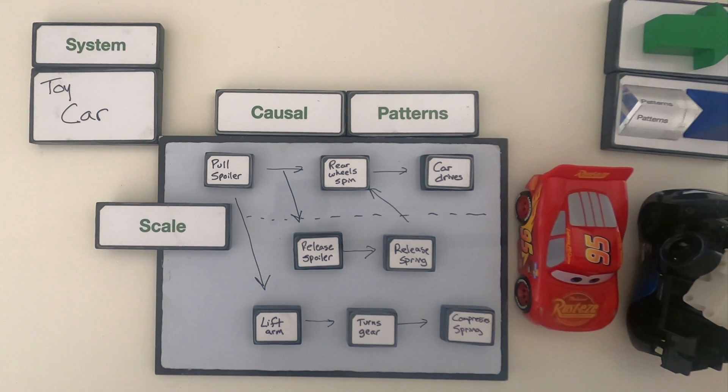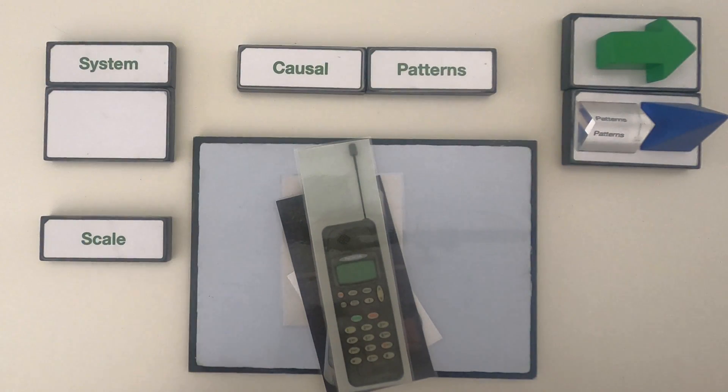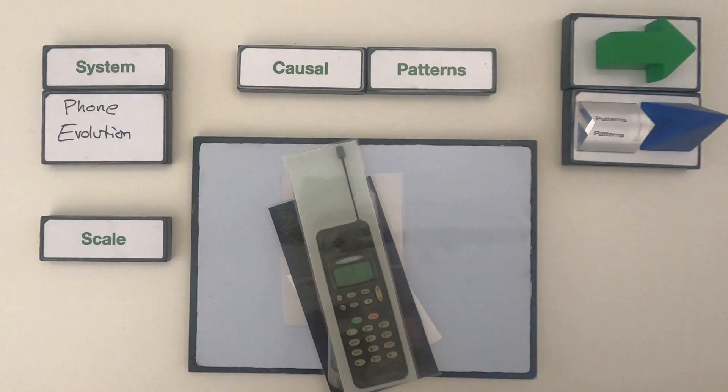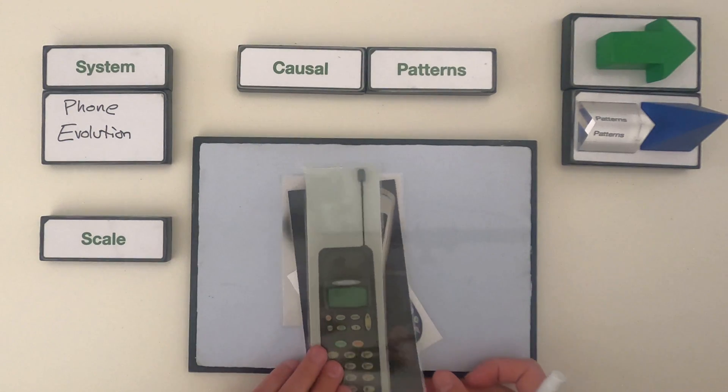So let me get this out of the way and then I'm going to give you a different object that you should go through and try to figure out the causal patterns in. All right, for the second example, we're going to look at phone evolution over time. So we've got these four phones, let me label those.